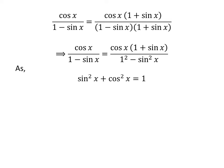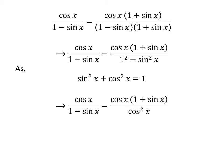We know the famous trigonometric identity: square of sine of x plus square of cosine of x is equal to 1. This implies that 1 minus square of sine of x is equal to square of cosine of x. Applying this identity in the denominator gives us cosine of x upon 1 minus sine of x is equal to cosine of x times 1 plus sine of x, upon square of cosine of x.